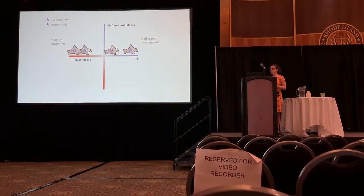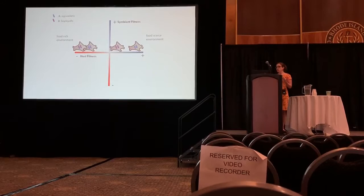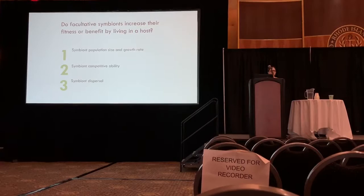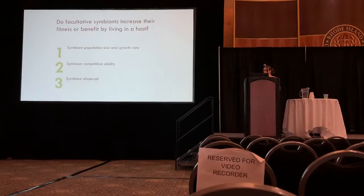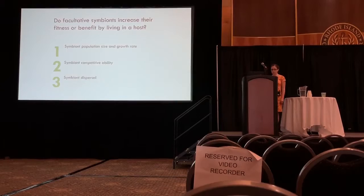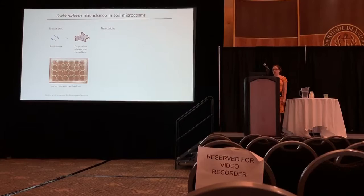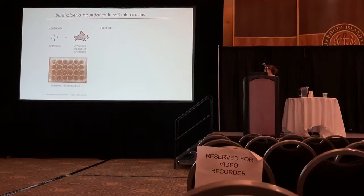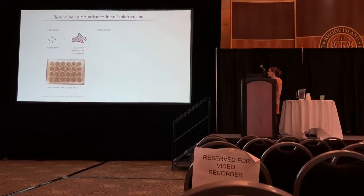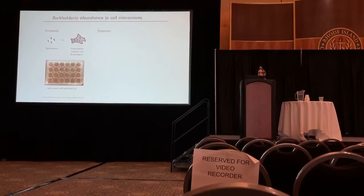This is a really good system to test symbiont fitness — we can grow symbionts separately from the host, mix and match them, and use soil in the lab in a semi-natural environment. I used this to look at three different measures of fitness: population size and growth rate, competition with other microbes in the soil, and dispersal. For the abundance experiment I did a simple experiment in soil microcosms using sterilized soil, with either Burkholderia alone as independent free cells, or Burkholderia already packaged inside Dictyostelium amoebas, with adjustments to equalize Burkholderia numbers between treatments.